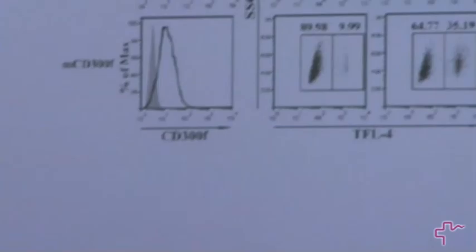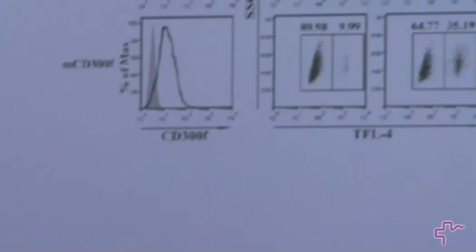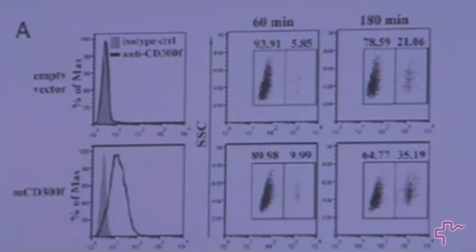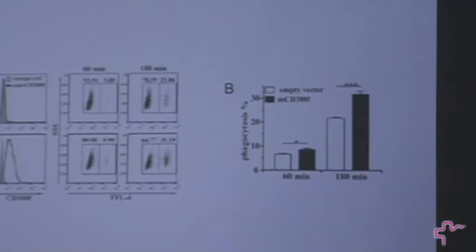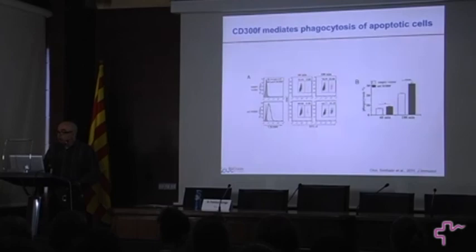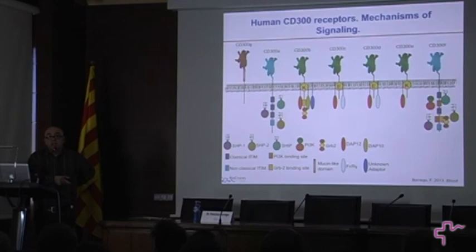CD300F, like CD300A, we also studied what role it has in phagocytosis of apoptotic cells — this is mouse CD300F. We showed that CD300F promotes the phagocytosis of dead cells. Results from my former laboratory show this increase in phagocytosis. CD300F-mediated phagocytosis is PI3-kinase dependent. As you can see, the signaling mechanism is especially complex for CD300F. In my lab, Karen the technician decided to study the signaling through CD300A.